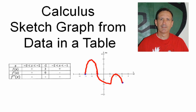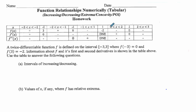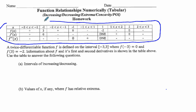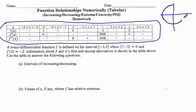In calculus, we're typically more prone to sketch a graph from a function, but in this case we have a table and we're going to use the data therein to sketch a graph. The main technique we're going to use is one we've talked about in class, where we draw a circle on the xy-coordinate plane and label the quadrants to understand what the basic curve of a graph will look like.